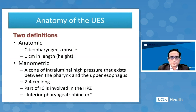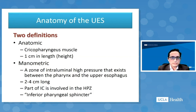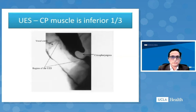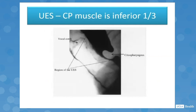The upper esophageal sphincter has two definitions: an anatomic definition as the cricopharyngeus muscle, approximately one centimeter in height, and a manometric definition as a zone of intraluminal high pressure between the pharynx and the upper esophagus, typically two to four centimeters long. Part of the inferior constrictor is also involved in this high-pressure zone. Having performed myotomies, I believe the cricopharyngeus is the primary contributor to the upper esophageal sphincter.